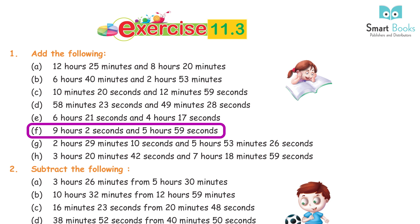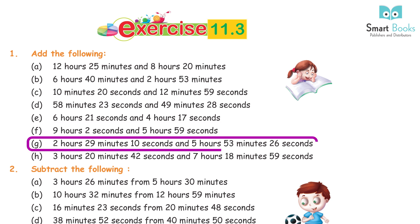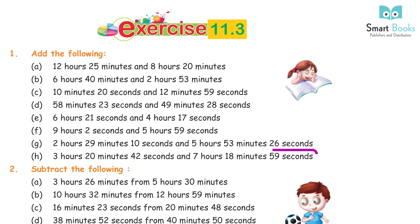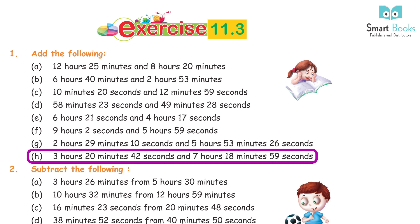F. 9 hours 2 seconds + 5 hours 59 seconds = 14 hours 1 minute 1 second. G. 2 hours 29 minutes 10 seconds + 5 hours 53 minutes 26 seconds = 8 hours 22 minutes 36 seconds. H. 3 hours 20 minutes 42 seconds + 7 hours 18 minutes 59 seconds = 10 hours 39 minutes 41 seconds.